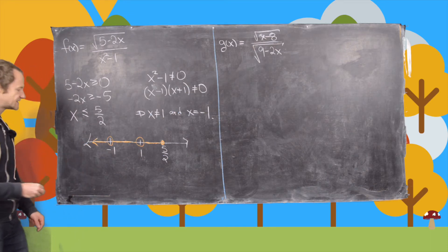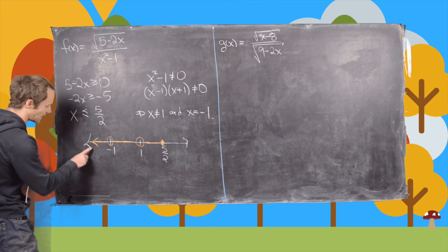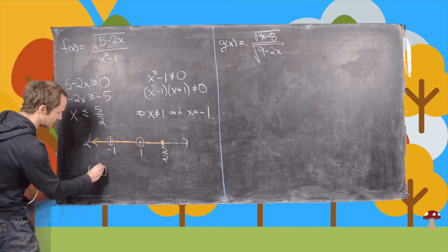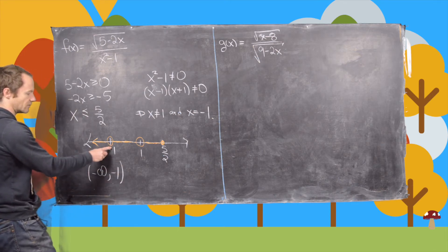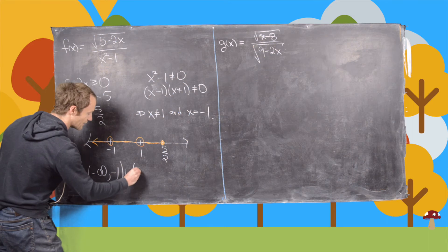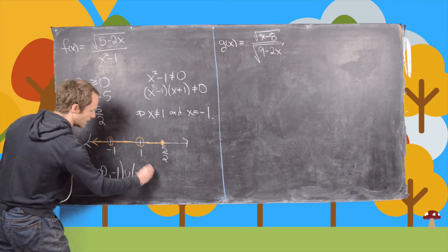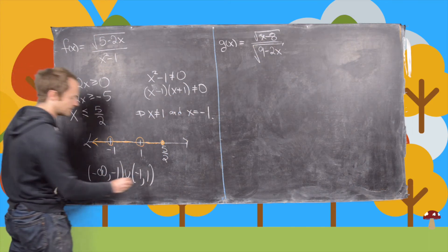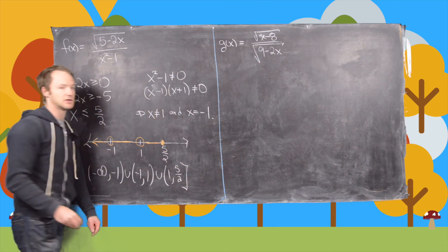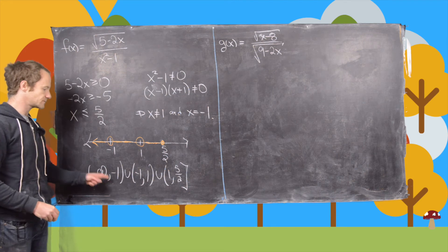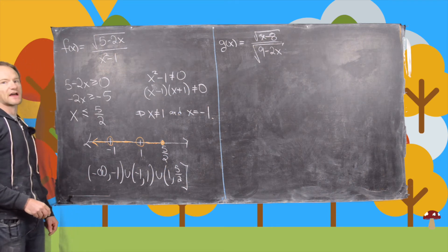And now we can turn this into interval notation as follows. This region is negative infinity stopping at negative 1, not including negative 1. And then we union that with negative 1 to 1, not including either. And then we union that with 1 up to 5 halves, and we end up including 5 halves. So there's the domain of that function.